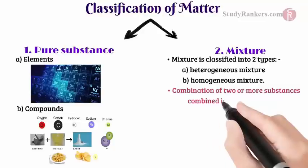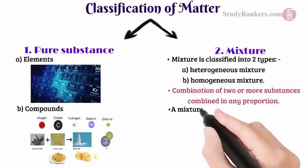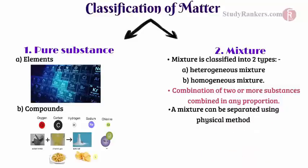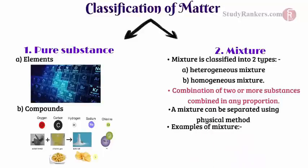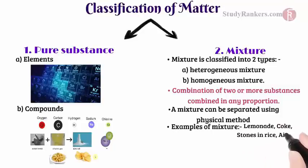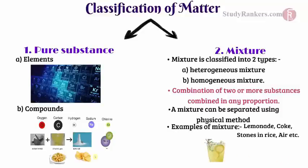What is a mixture? A mixture is a combination of two or more substances combined in any proportion. Note that substances in a mixture do not chemically combine together to form a new substance. Therefore, a mixture can be separated using physical methods. Examples of mixtures are lemonade, coke, stones in rice, air, etc.